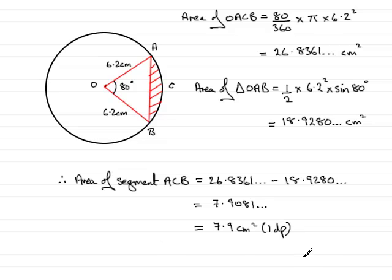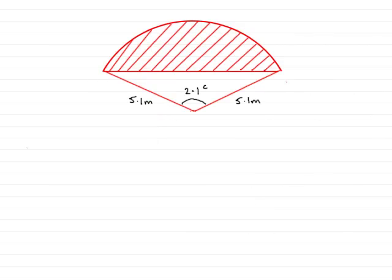This was an example demonstrating how we find the area of a segment when the angle is in degrees. Let's see what happens when we're dealing with an example in radians. Here I have an example where we've got to find the shaded area of a segment from a circle of radius 5.1 meters, and the angle subtended is 2.1 radians.